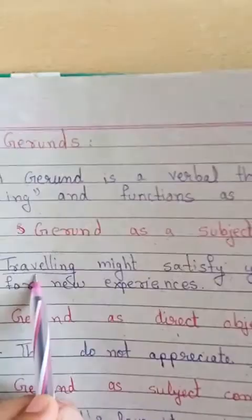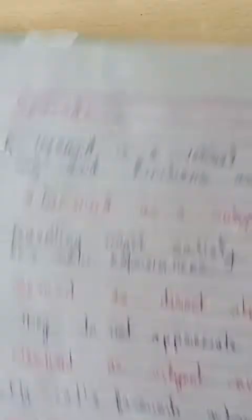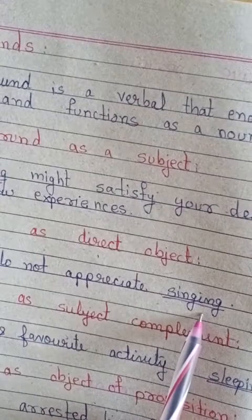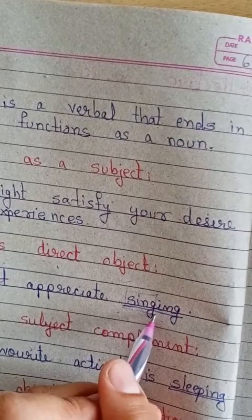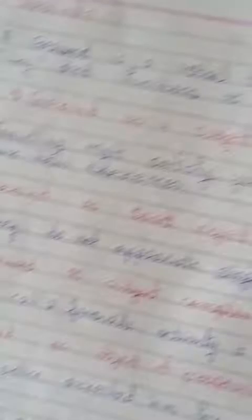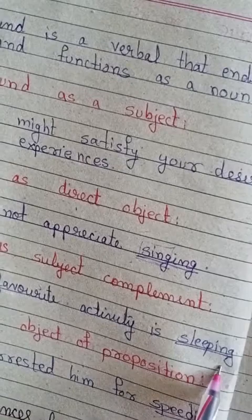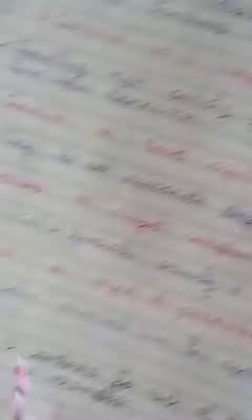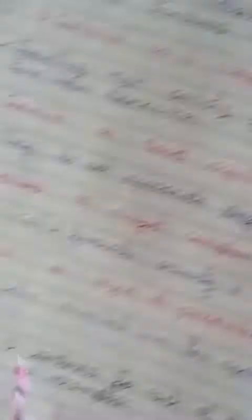'They do not appreciate singing' — here 'singing' is a gerund acting as the object. 'My cat's favourite activity is sleeping' — 'sleeping' is a noun here, the name of the activity. 'The police arrested him for speeding' — he was driving too fast, and 'speeding' is the gerund here acting as a noun. So in all these cases the verb in '-ing' form is playing the role of a noun — that is gerund.